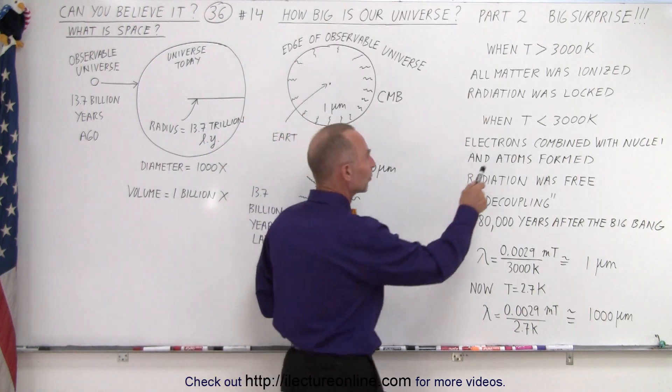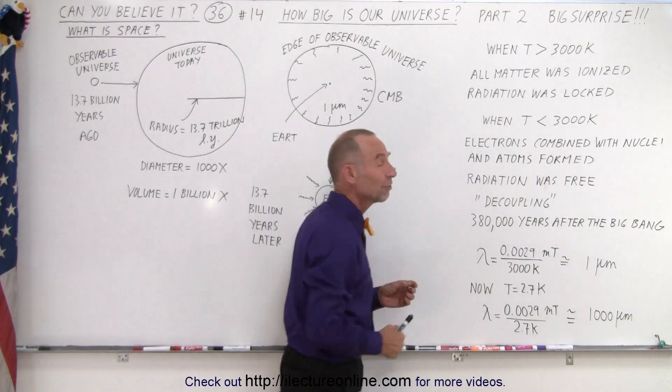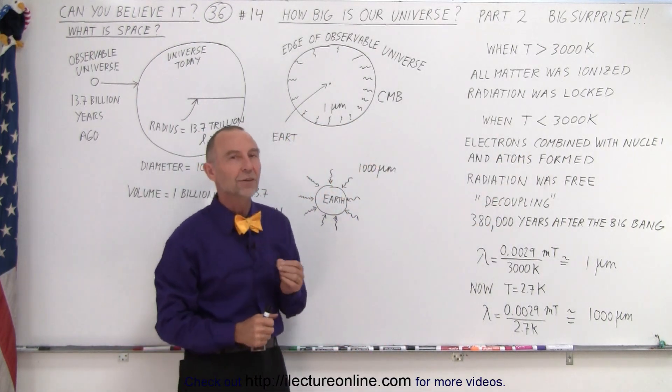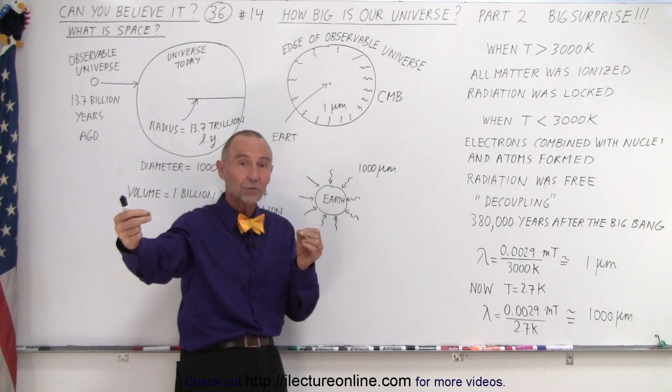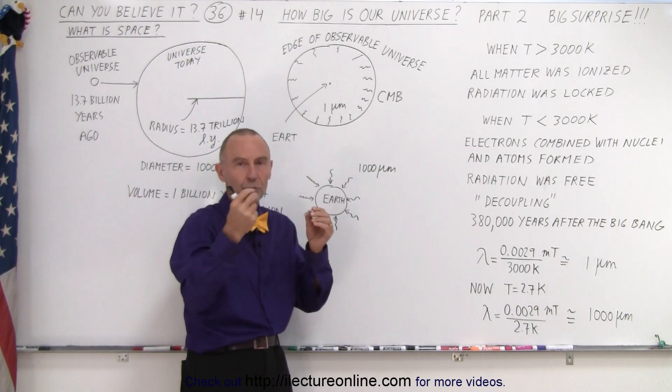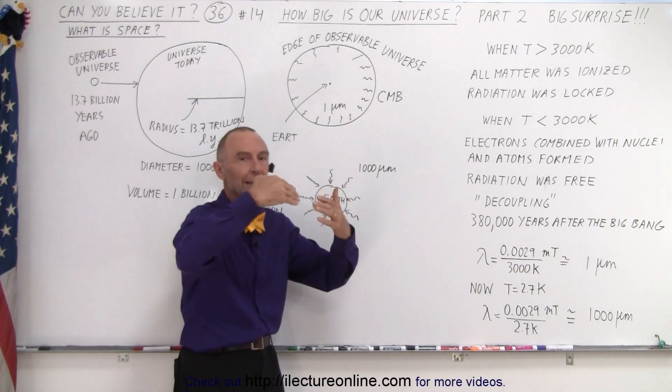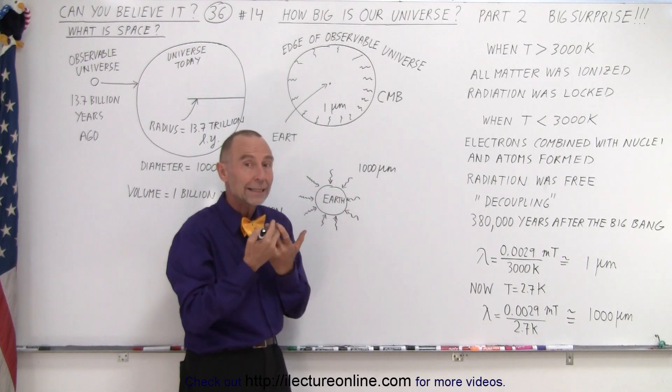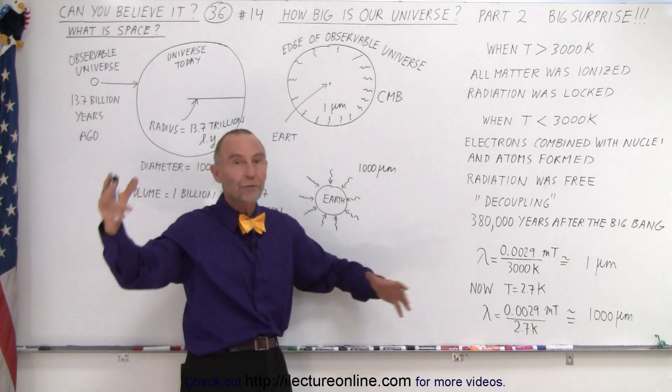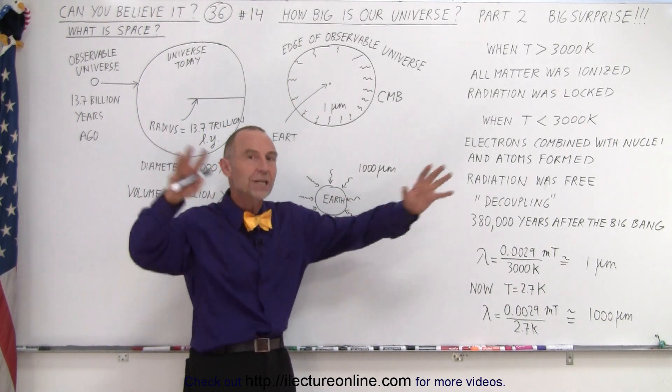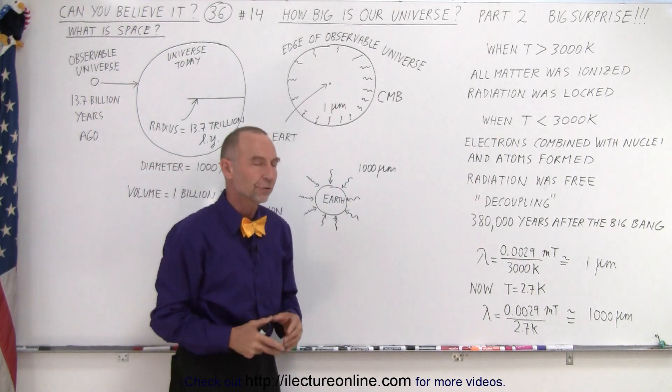At some point the universe continued to cool down until the temperature dropped below 3000 Kelvin. At that point it was cool enough for the electrons to join the hydrogen or to join the protons to form hydrogen and for the electrons to join the helium nuclei to form helium. And all of a sudden there were no free floating electrons and radiation was free to flow through the entire universe.